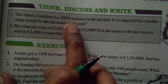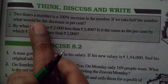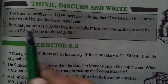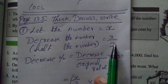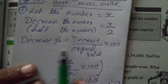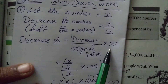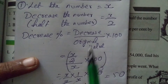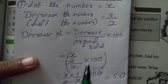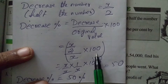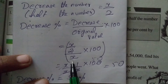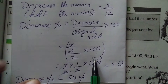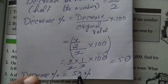Two times a number is 100% increase — when a number is x, two times is 2x, which is 100% increase. But if we take half the number, half the number is x/2. Decrease percent equals (x/2) divided by x into 100. x/2 divided by x gives 1/2 into 100 equals 50%.